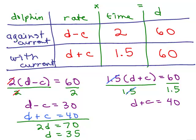We also need to get the rate of the current. So we could go back to either of these two equations to get the rate of the current, either d minus c equals 30 or d plus c equals 40.